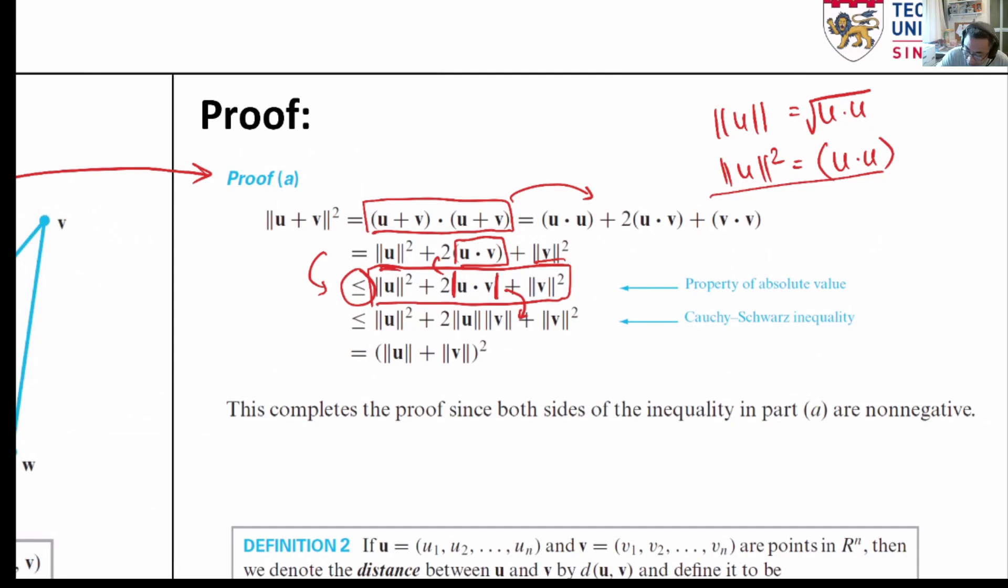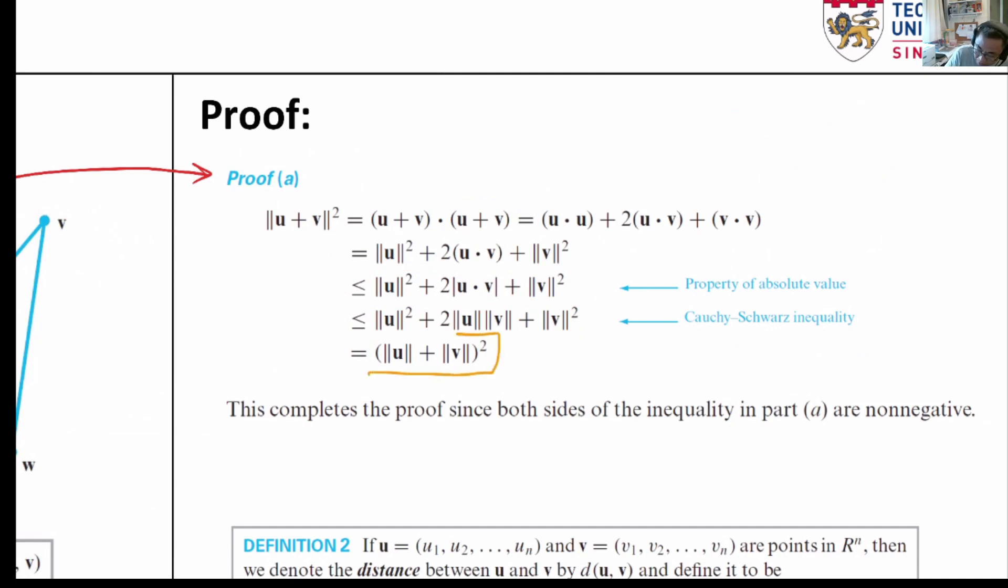Which says the norm of u multiplied by the norm of v will always be greater or equal to u dot v and hence we can have this greater or equal to sign in this equation to the previous equation over here.